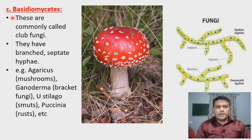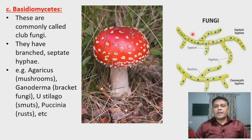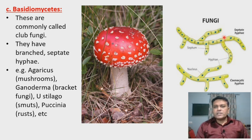The third type of fungi is Basidiomycetes, also called Club fungi. Some fungi have branched septate hyphae — the hyphae show a septum between adjacent nuclei and are branched. We can see the branched hyphae, and as they show presence of septum, they are called septate hyphae.